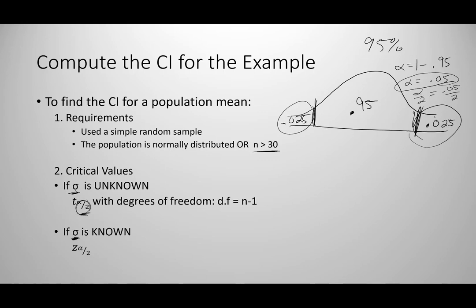Since sigma is unknown, I go to my t distribution table and look up the critical t value. Our degrees of freedom is n minus 1 — with n equal to 40, that gives 39 degrees of freedom. I go down to df = 39 in the t table and find the critical values. I end up getting 2.023, and the lower critical value would be negative 2.023. These are my critical values using the t distribution.